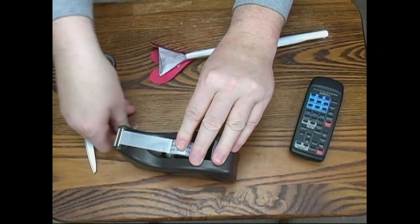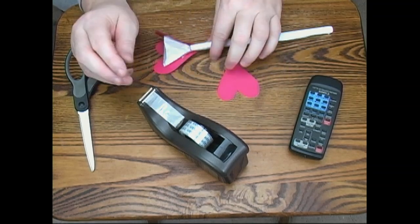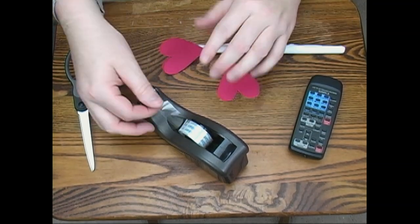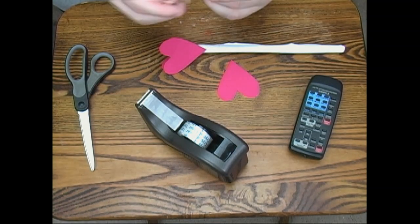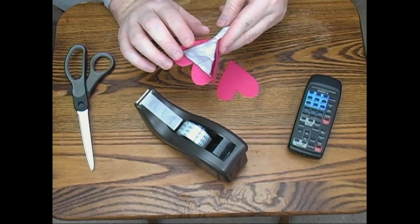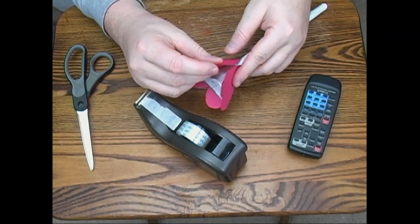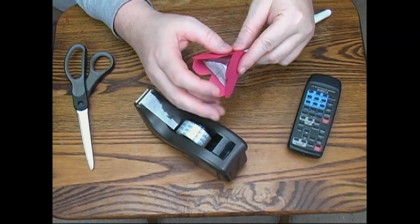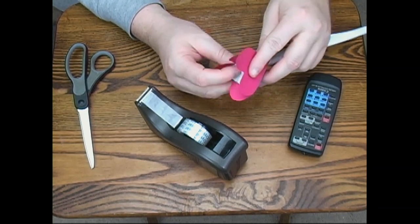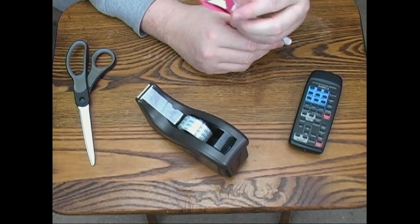Take your tape, roll it. Put some near the bottom, put some near the top. And add your last heart, trying to make it the same height as the other hearts. Press it on, press it in, and press on all three. And there we go.